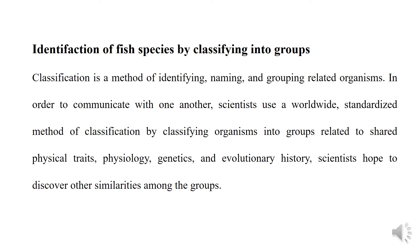Identification of fish species by classifying into groups. Classification is a method of identifying, naming and grouping related organisms. In order to communicate with one another, scientists use a worldwide standardized method of classification by classifying organisms into groups related to shared physical traits, physiology, genetics and evolutionary history. Scientists hope to discover other similarities among the groups.